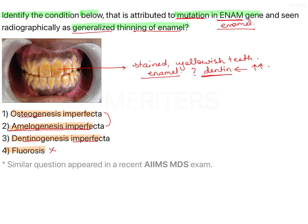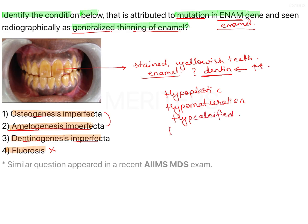There are four types of amelogenesis imperfecta: the hypoplastic type, the hypomaturation type, the hypocalcified type, and hypomaturation-hypoplastic with taurodontism. This is purely a genetic condition with clinical presentations including pitting or hypoplastic defects, smooth or rough appearing teeth, pigmented teeth, snow-capped teeth, and hypocalcified teeth.